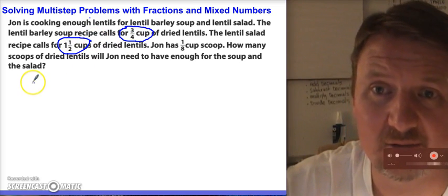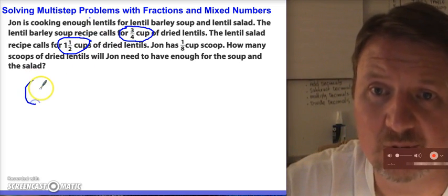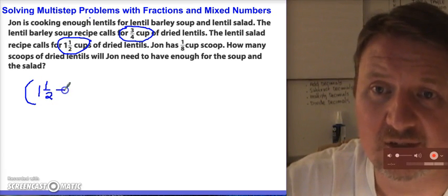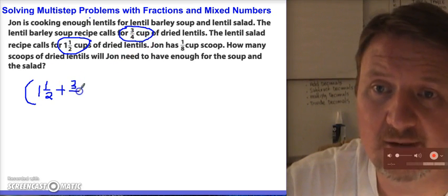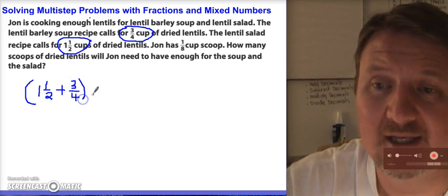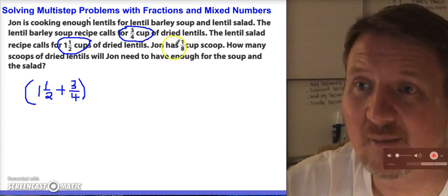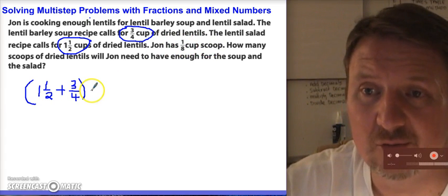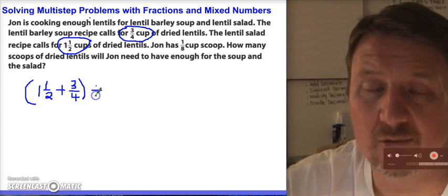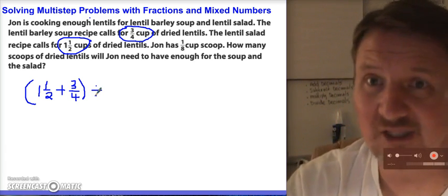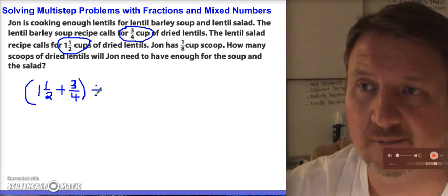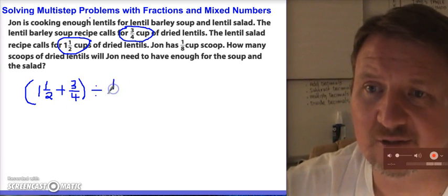I need to figure out how much this is total, so I've got to add these two numbers together. I'm going to put some parentheses and start with 1 and 1/2, add it to the 3/4 cups — that's going to tell me how many lentils I need total. Then I'm going to take that amount and divide it by the 1/8 cup scoop, so I can figure out exactly how many scoops I need.